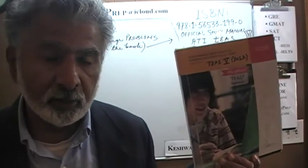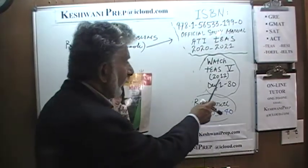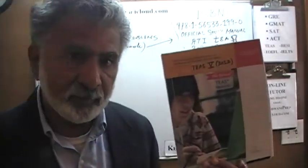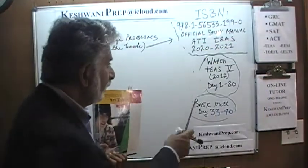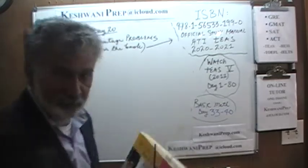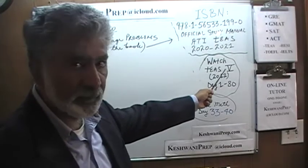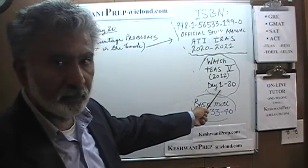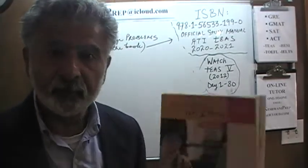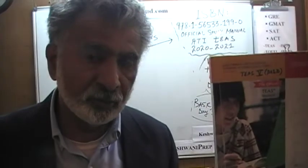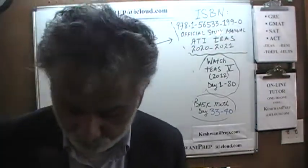The three problems that we are about to do actually come out of the old edition, TEAS 5. TEAS 5 came out in 2012 and I have solved every single problem that appears in that book in a series of videos on my channel. Just search for TEAS 5, Keshwani, TEAS 5 day 1 — that is where the series begins. There are 80 videos where you will find a solution to every single problem. And it is out of that book that we are going to do three problems today.